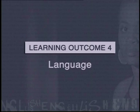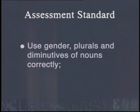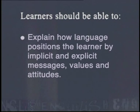The following lesson is linked to Learning Outcome 4, Language, and addresses the assessment standard that requires learners to use gender, plurals and diminutives of nouns correctly. Learners should be able to explain how language positions the learner by implicit and explicit messages, values and attitudes.